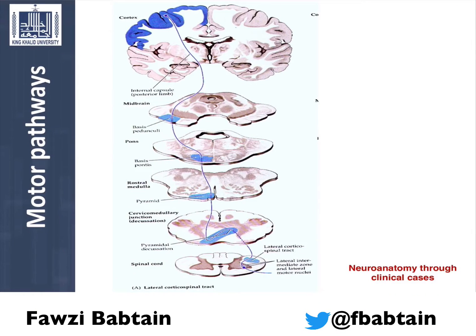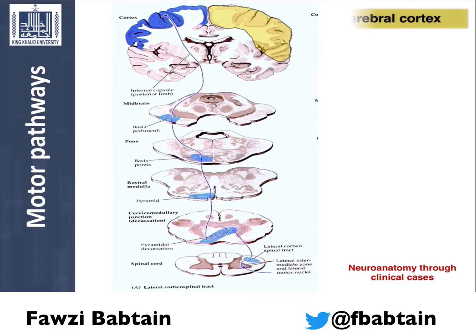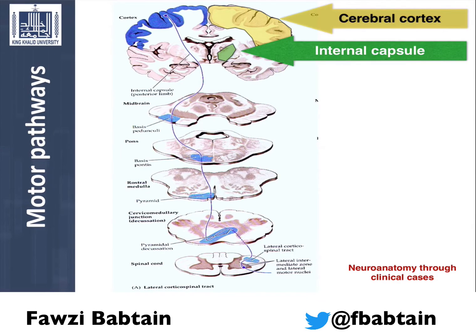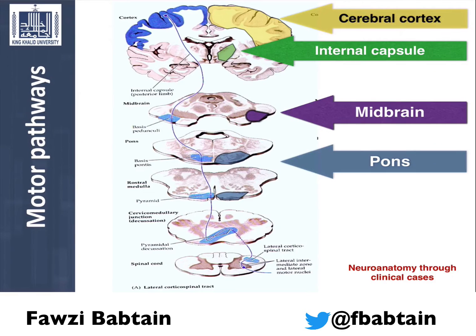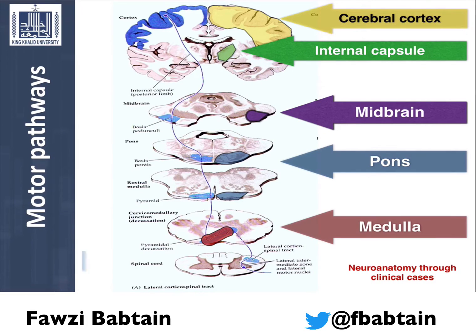A cross section of the brain and the brain stem at different levels showing the motor pathways. A few structural landmarks you should know to understand the pathways: the cerebral cortex where the motor fibers originate, the internal capsule deep within the brain, the anterior portion of the midbrain or the crus cerebrae, the anterior portion of the pons or the basis pontis, the pyramids of the medulla, and the corticospinal tracts of the spinal cord.